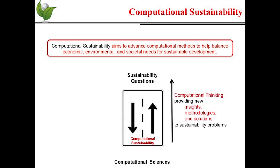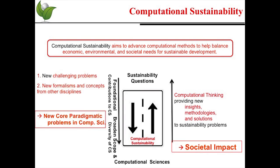Computational sustainability is a two-way street. On one hand, it injects computational thinking that provides new insights, methodologies, and solutions to sustainability problems. On the other hand, it leads to foundational contributions to computer science by exposing computer scientists to new challenge problems and new formalisms and concepts from other disciplines, leading to cross-cutting computational problems in computer science. More importantly, it has tremendous societal impact.